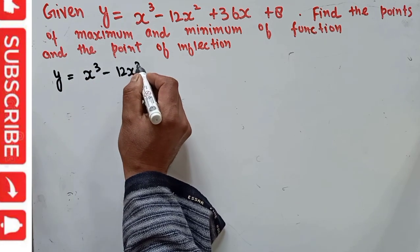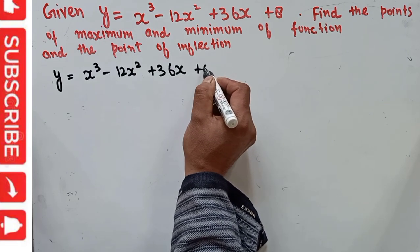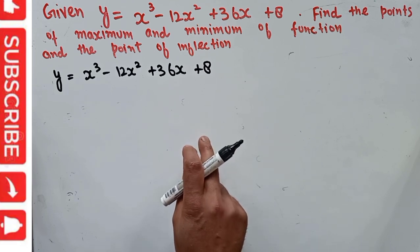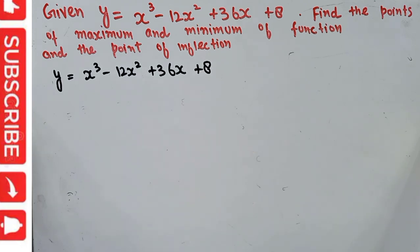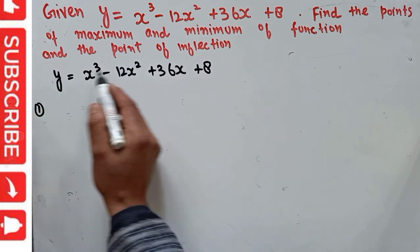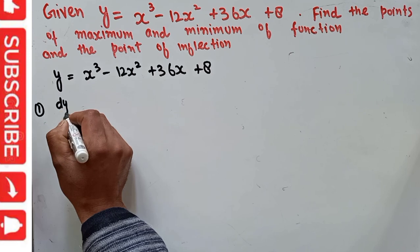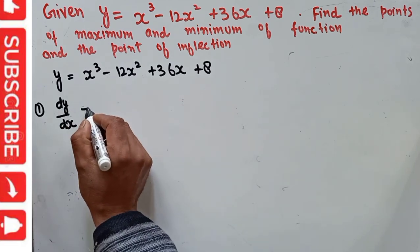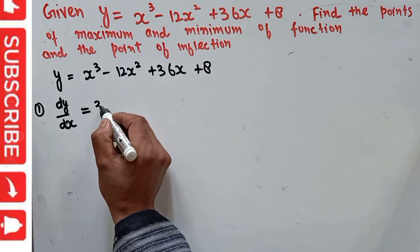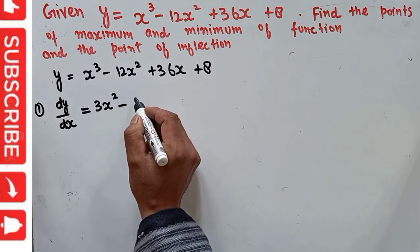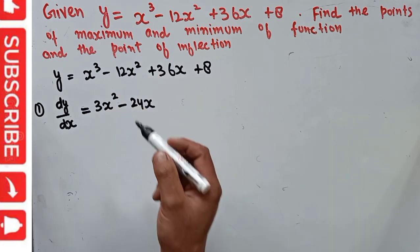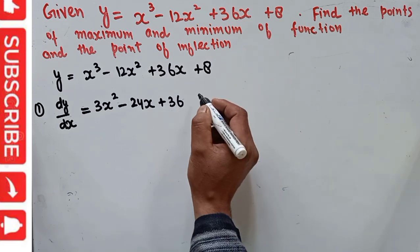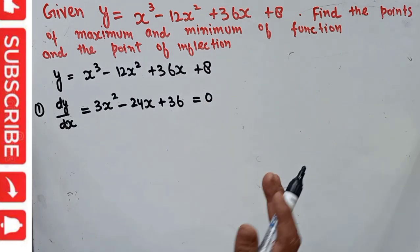We have the function y = x³ - 12x² + 36x + 8. To find out the points of maximum and minimum, first we need to find out the first derivative of this function. So the first step is to find dy/dx and set it equal to zero. The derivative of x³ is 3x², minus derivative of 12x² is 24x, plus derivative of 36x is 36, and derivative of a constant is 0. We set it equal to 0.